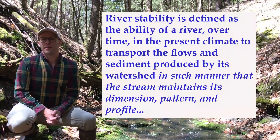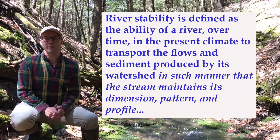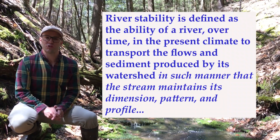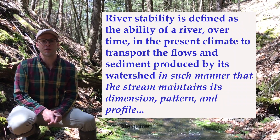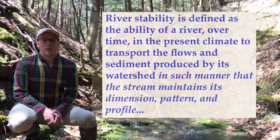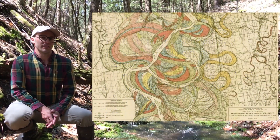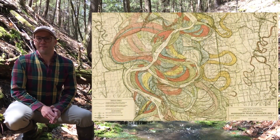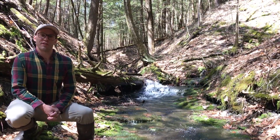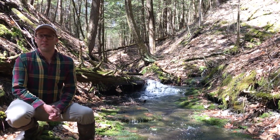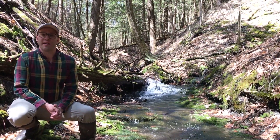A stable stream maintains its dimension, pattern, and profile over time while transporting sediment and flows from its watershed. It's stable whether it dramatically migrates across a wide flat valley floor, or if it's a small stream like this one that will stay relatively straight in a steep and confined valley.